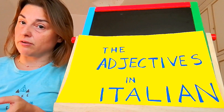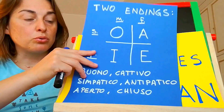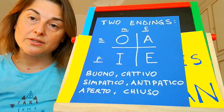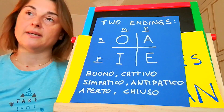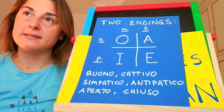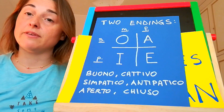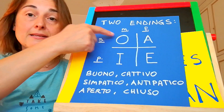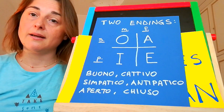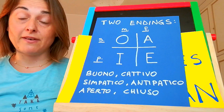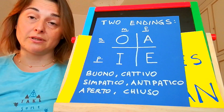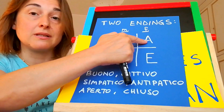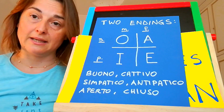The first class of adjectives has two endings: one for the masculine, one for the feminine. It means that if you have a masculine noun, you must use this ending. And instead, if you have a feminine noun for the same adjective, you must change the ending and use this other ending.